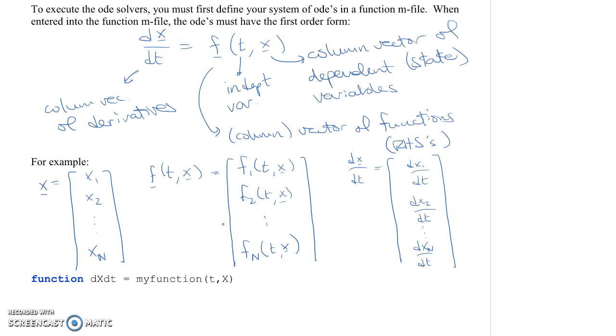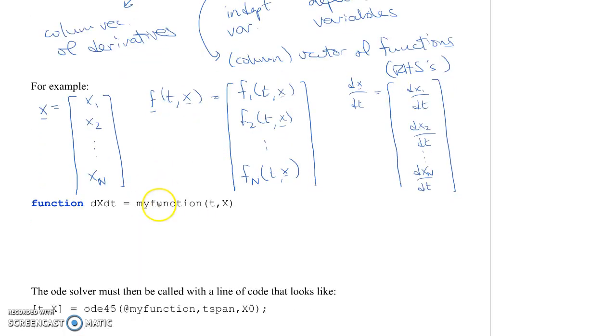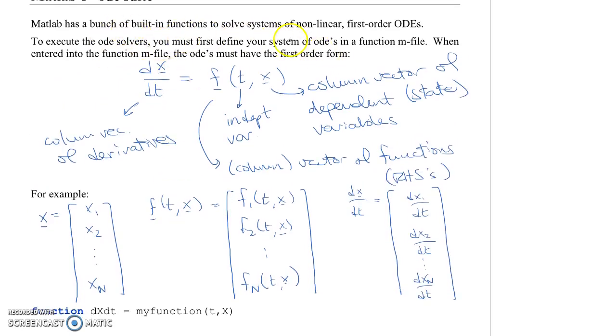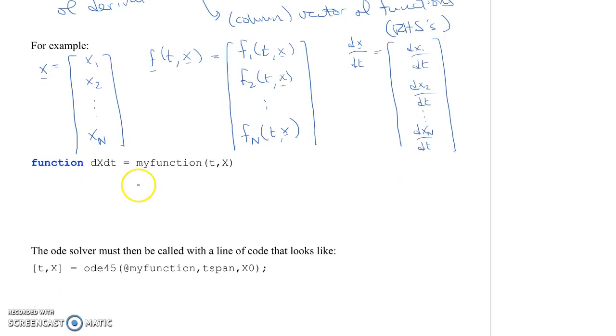Now, the way it's going to look in MATLAB is you have to define your system of ODEs into a function M file. So the function M file should start with the word function, and then the output of your function should be DXDT, or some variable which corresponds to your time derivatives. It has a name, which in this case, generically, I'm going to call my function, and it has two inputs, little t and X.